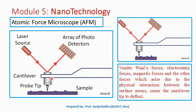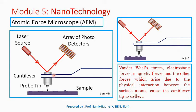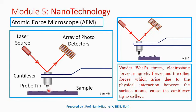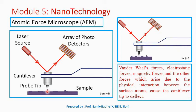The atomic force microscope consists of a micro-scale cantilever of length around 100 angstroms with a sharp tip, called a probe, having a radius of around 10 angstroms. So the radius of this tip of the probe is only 10 angstroms.